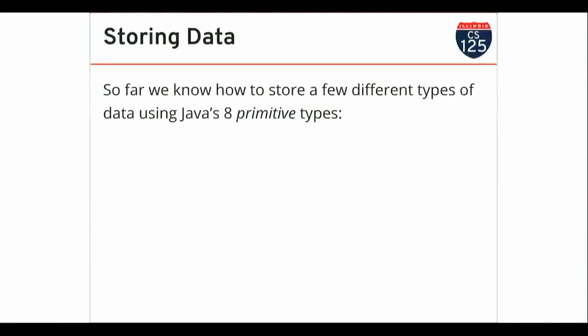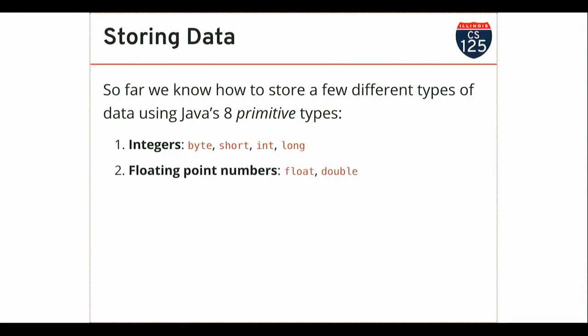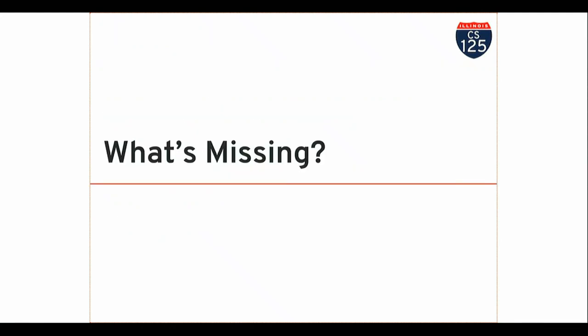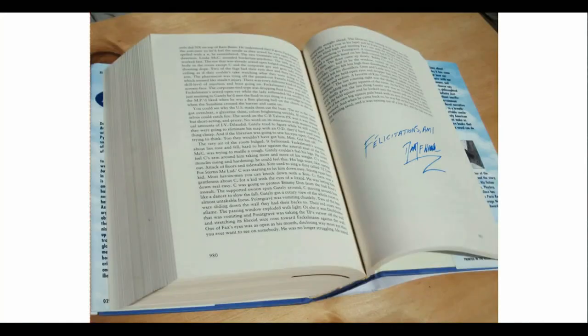We've talked about how to store data using Java's eight primitive types: integer values without a decimal point, floating point numbers, characters, and Boolean values. We've also looked at ways to store sequences of these. These are great for representing lots of data, but as I was just saying, there's a big hole in this picture.